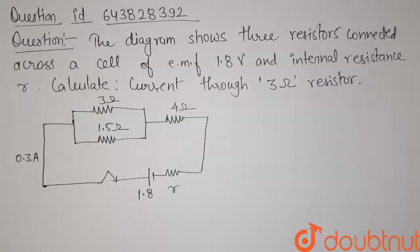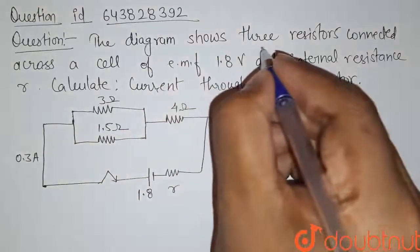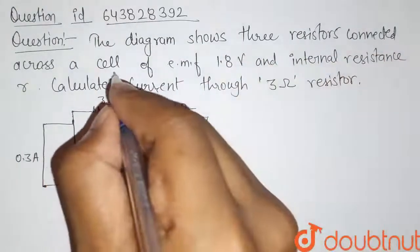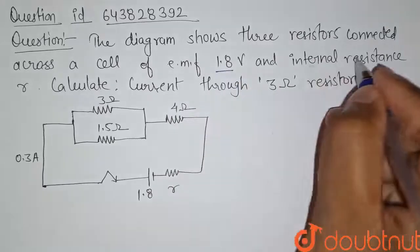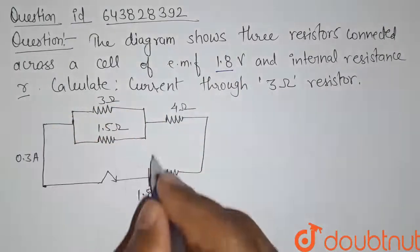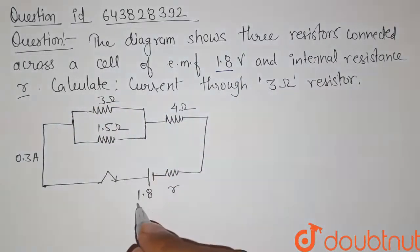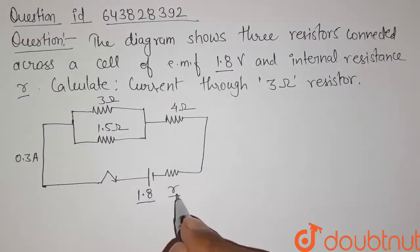Hello students, here is our question. The diagram shows three resistors connected across a cell of emf 1.8 volt and internal resistance r. So this is the diagram. Here this is a cell of emf 1.8 and internal resistance small r.